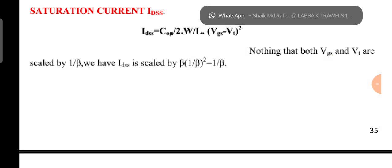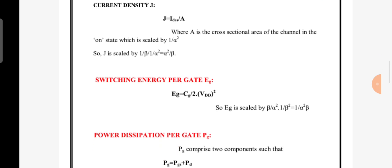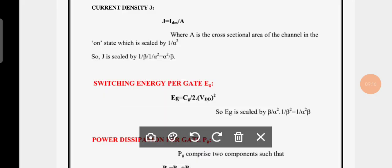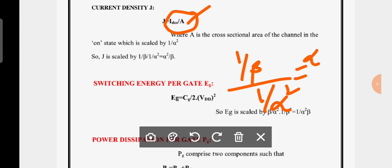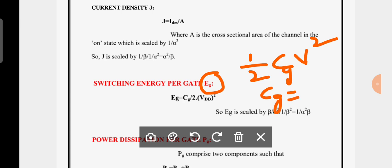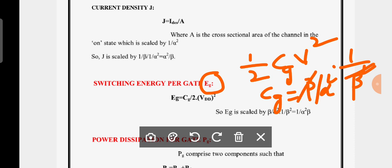For current density (current per unit area), current has scaling factor 1/β and area has scaling factor 1/α², so current density scales as α²/β. For energy, E = ½CV². Gate capacitance C scales as β/α² and voltage V scales as 1/β, so V² = 1/β². Then C × V² = (β/α²) × (1/β²) = 1/(α²·β). Therefore energy scales as 1/(α²·β).